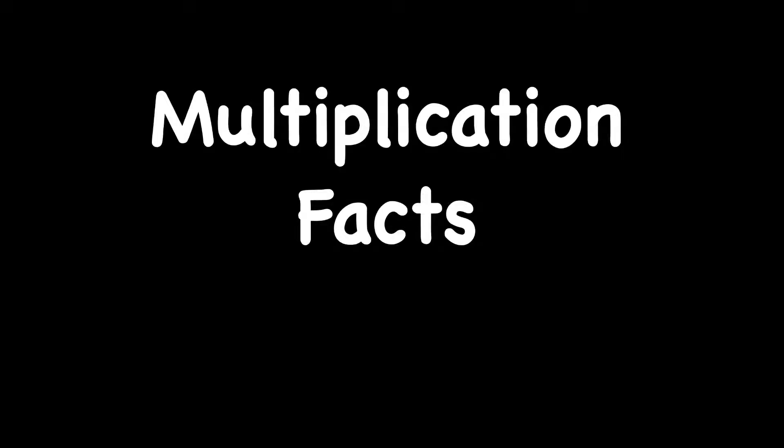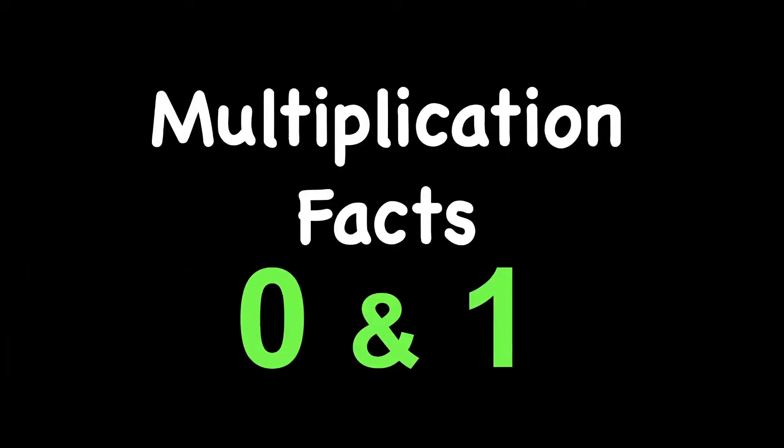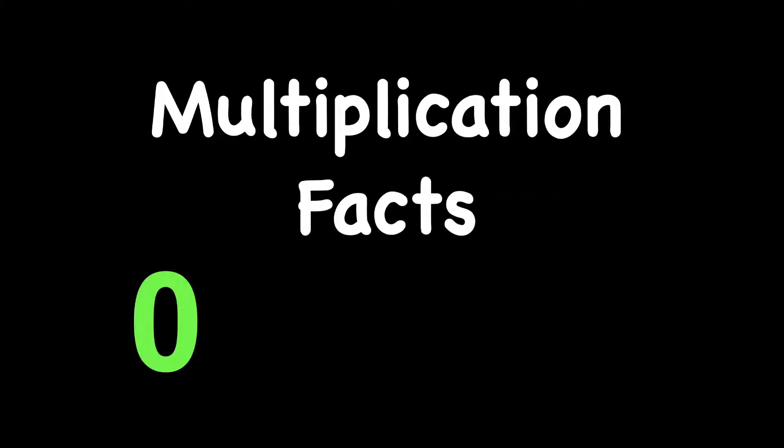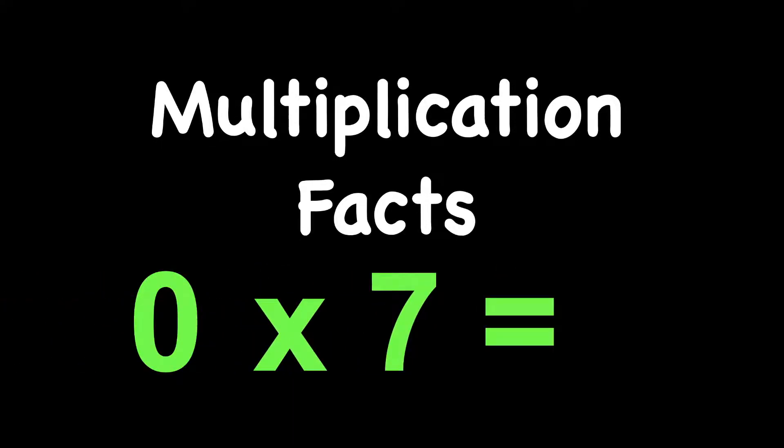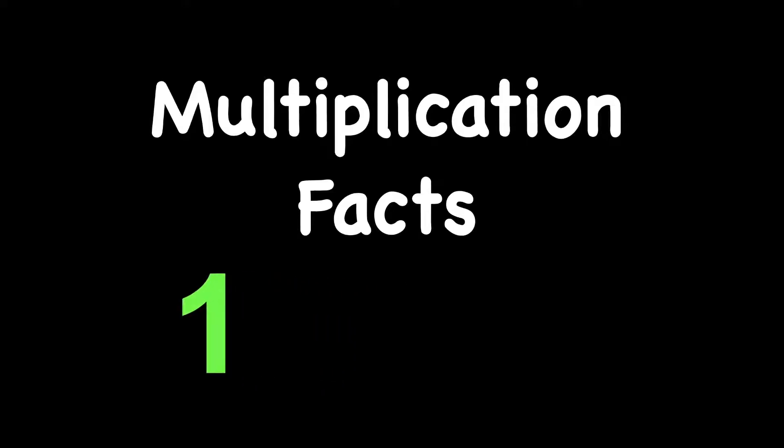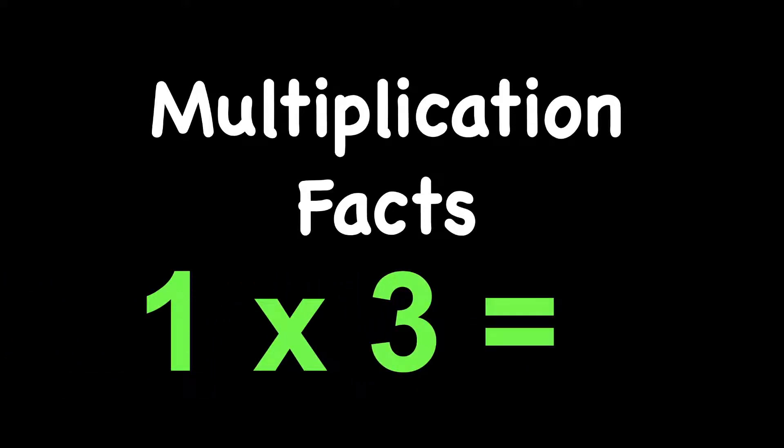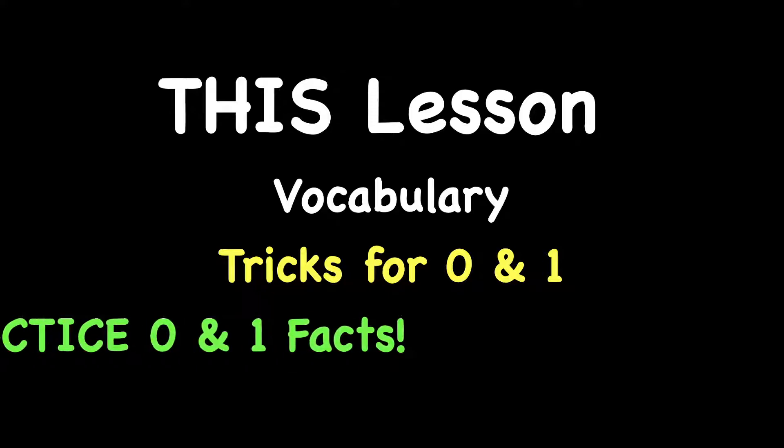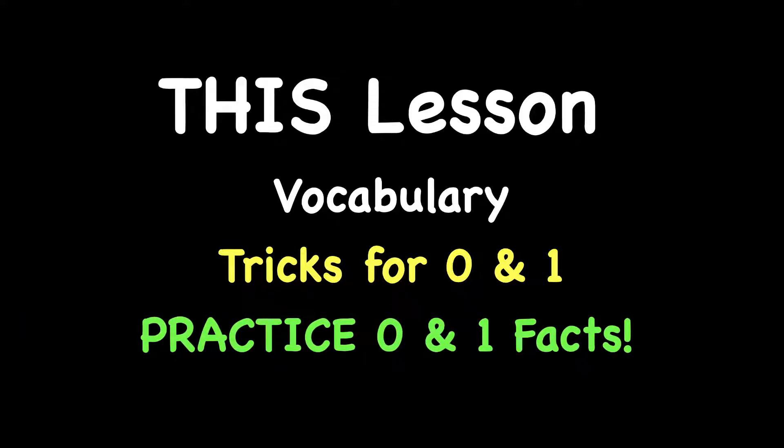Hey kids, today we will practice multiplication facts for 0 and 1. For example, 0 times 7 would equal 0, or 1 times 3 would just equal 3. For this lesson we're going to practice some vocabulary, talk about some tricks for 0 and 1, and then practice our 0 and 1 facts.